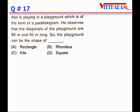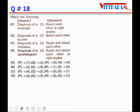A tool is playing in a playground of the form of a parallelogram. The diagonals of the playground are 80 m and 60 m long. What shape could the playground be? In a rectangle and square, diagonals are equal in length, but 80 ≠ 60. In a rhombus, the diagonals are not necessarily equal, so the playground can be a rhombus.